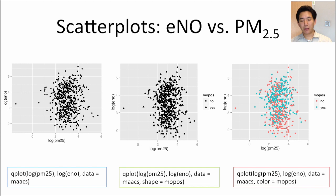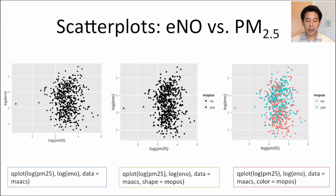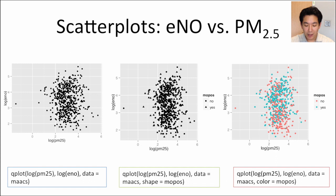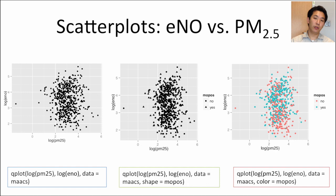Looking at scatter plots, I want to see whether exhaled nitric oxide is related to the level of fine particulate matter in the home — so I'll plot log ENO against log PM2.5. A simple scatter plot is a bit difficult to interpret on its own. In a second plot, I separate the two groups (mouse-positive and mouse-negative) using different shapes — triangles and circles — though overlapping points make it hard to distinguish them. On a third plot, I separate the groups by color instead, which is a bit easier to see.